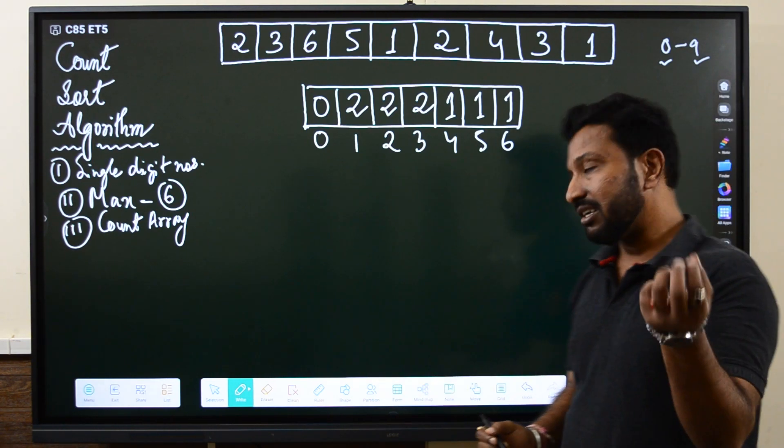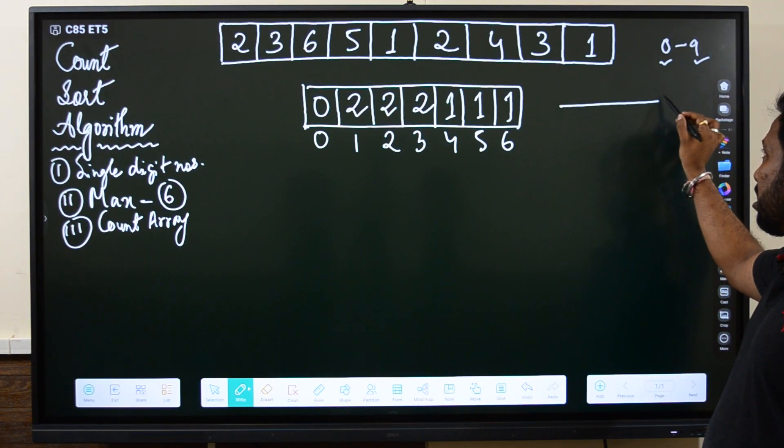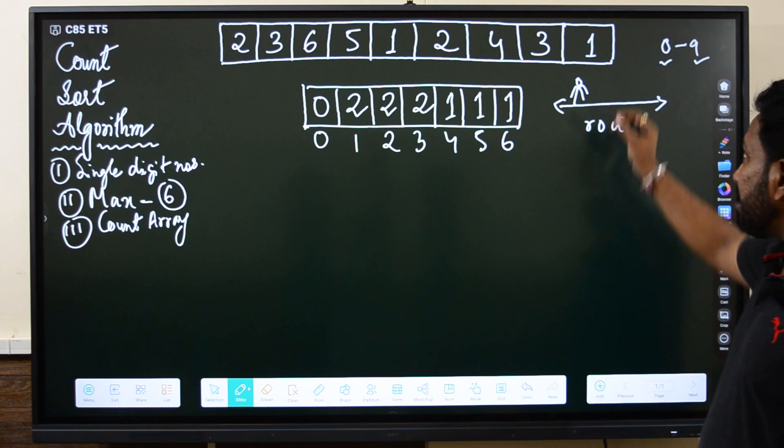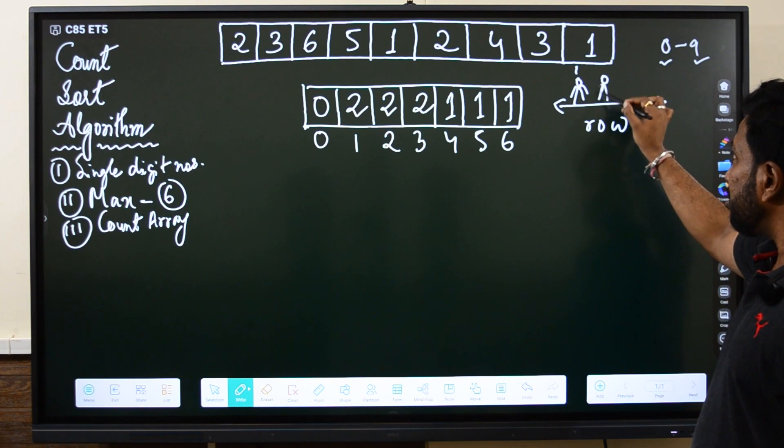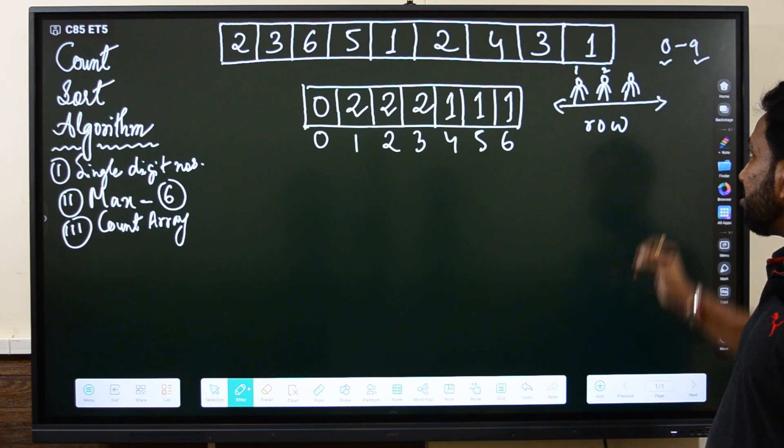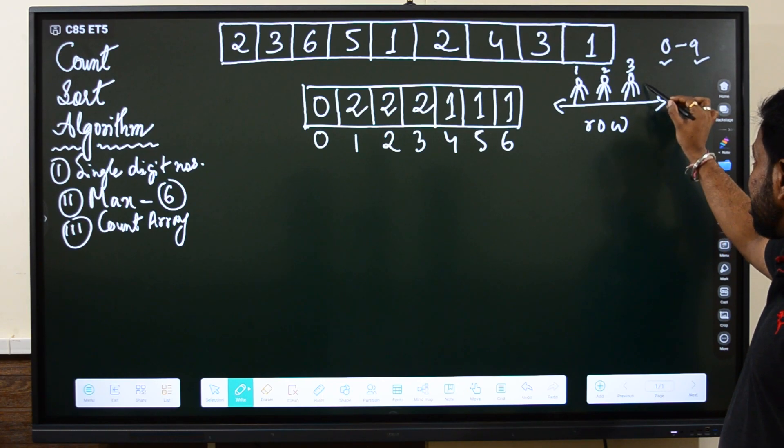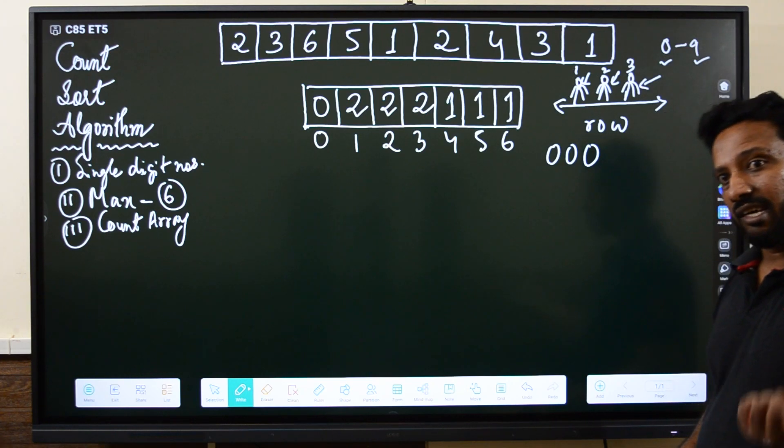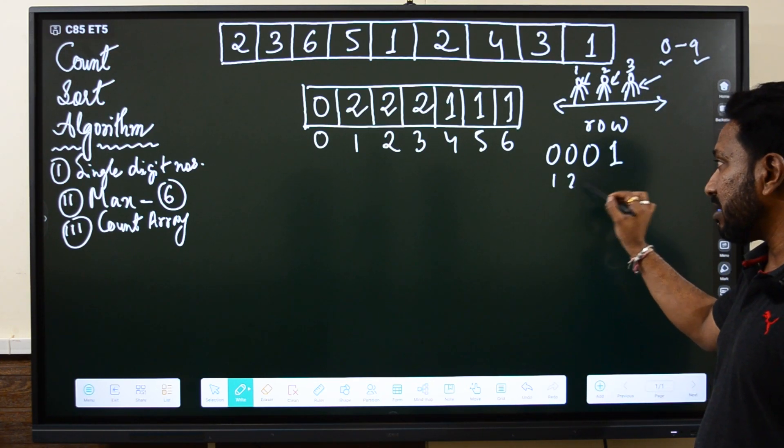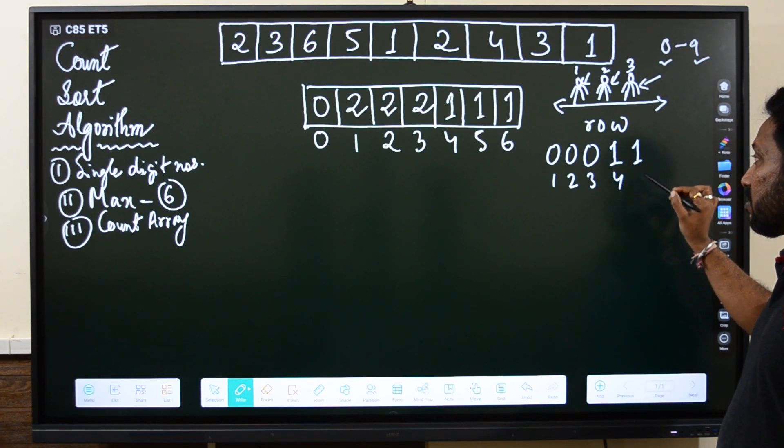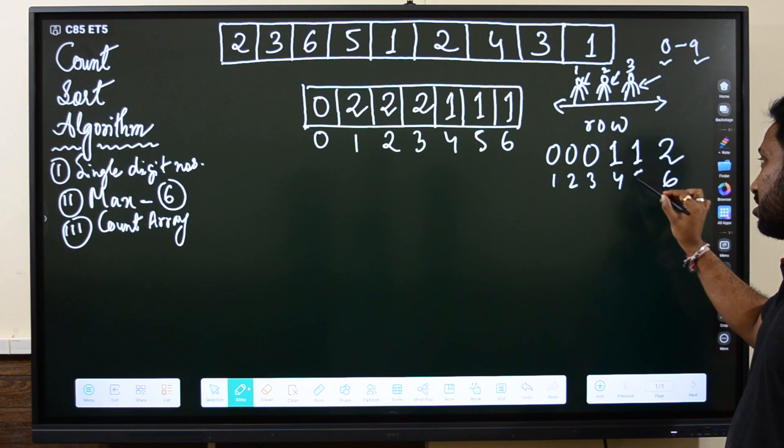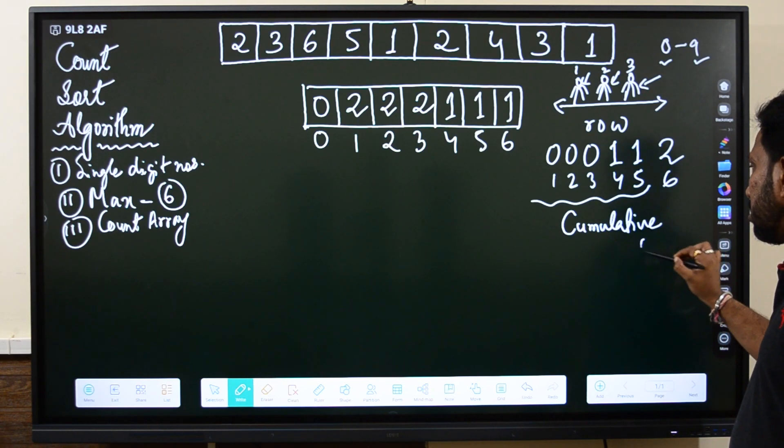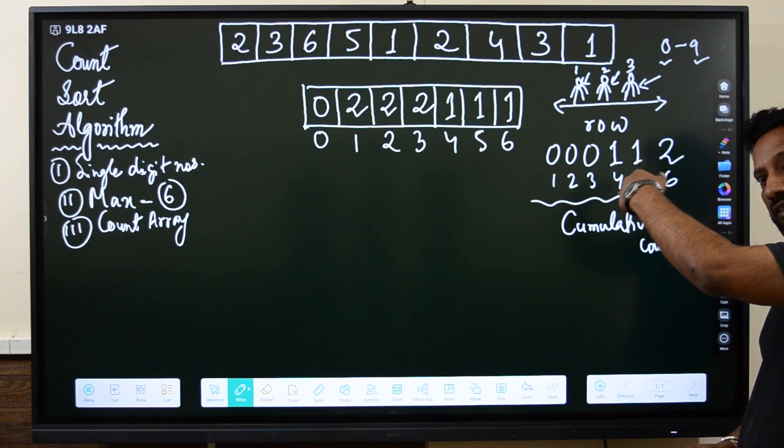Now before going to the next part I want to ask you something. Suppose this is a simple seating arrangement or a row where one person is already seated. For the next person, if this is position number 1, the next person will obviously take position 2, and if there is one more they will take position number 3. So the current position is always dependent on the previous positions, correct? Similarly, if there are one, two, three zeros, the position of one in the array will always be the next position. This is called cumulative count.